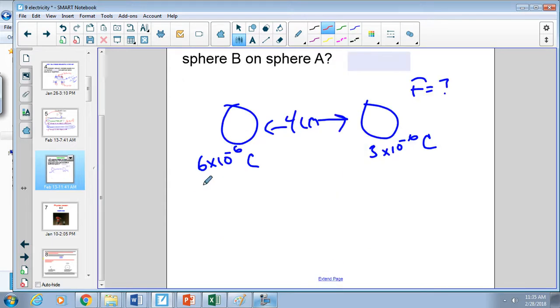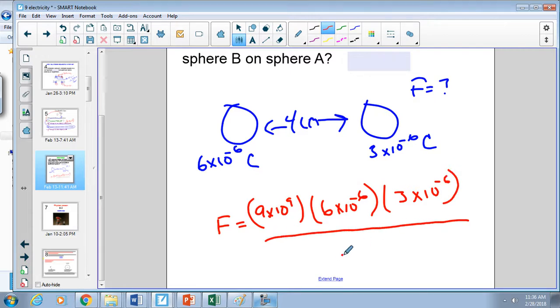So what we're going to go ahead and do is first convert four centimeters into meters - remember it has to be in meters. So our force should equal k, 9 times 10 to the 9th, charge number one 6 times 10 to the negative 6, charge number two 3 times 10 to the negative 6, divided by our distance 0.04 meters squared. And you should end up with...